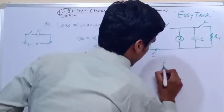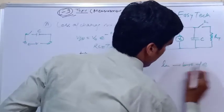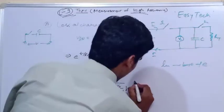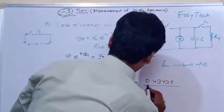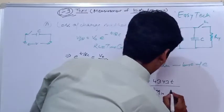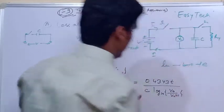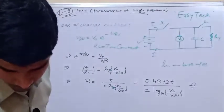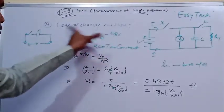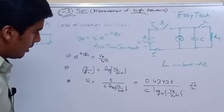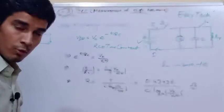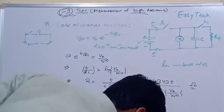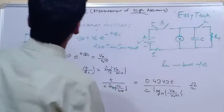From the derivation, R is equivalent to: R = t / (C · ln(V₀/Vct)), where ln has base e. If you want to convert to base 10 logarithm, the formula becomes: R = 0.4343 · t / (C · log₁₀(V₀/Vct)), with the result in ohms. This is the loss of charge method formula used to find the unknown high resistance.